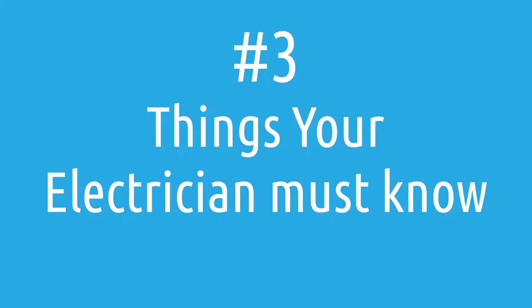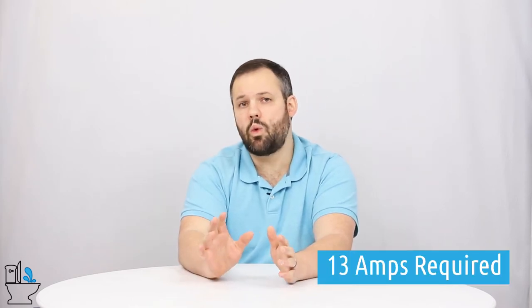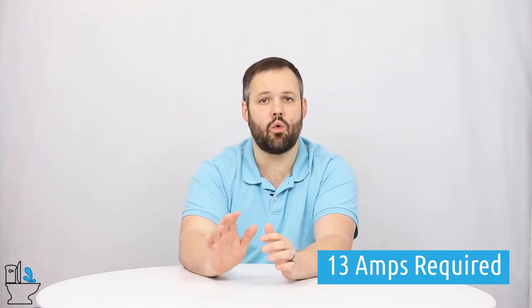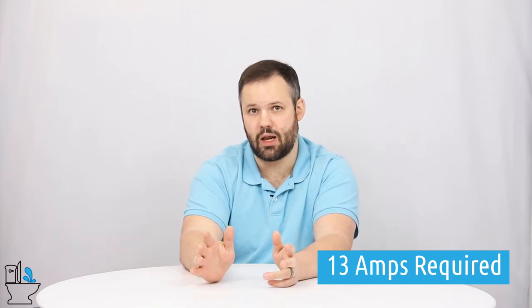Things your electrician needs to know. You do need an electrical outlet to make the Toto NeoRest RH work. That being said, it is a standard three-prong outlet. Top pull on the Toto NeoRest RH is about 13 amps, so we recommend a 15 amp dedicated line or if you're able a 20 amp dedicated line.